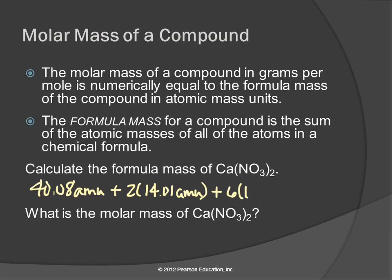And the atomic mass of oxygen is 16. So 40.08 plus 2 times 14.01 plus 6 times 16.